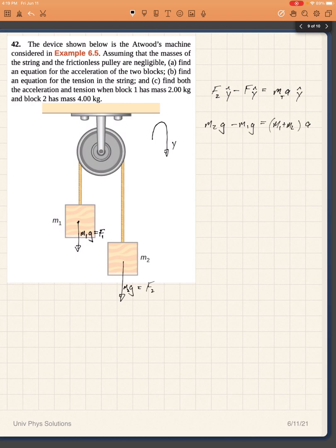Has to be equal to the total mass which is M1 plus M2 times my resultant acceleration. I can factor out G, so I have G times M2 minus M1 is equal to M1 plus M2 times A.